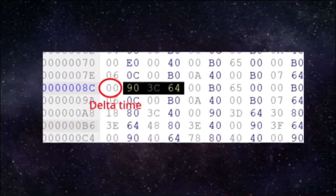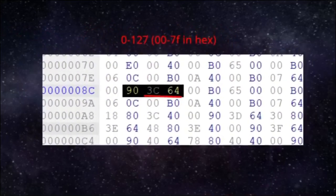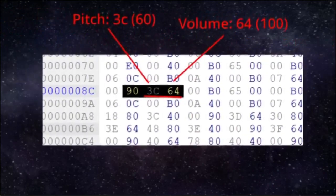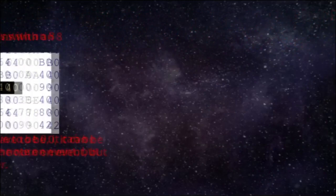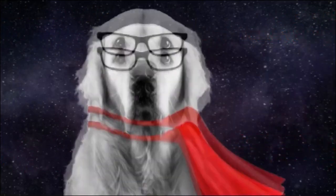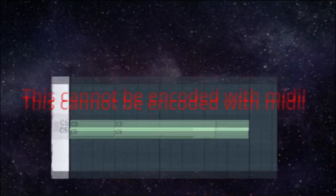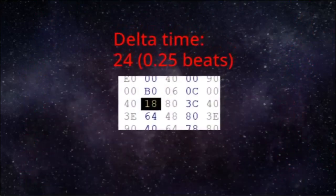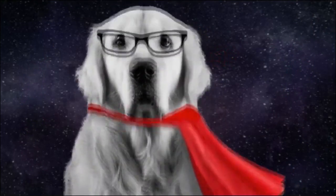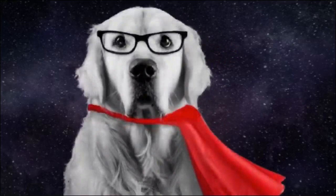Now let's move on to note on and note off events. To identify a note on event, look for a byte after the delta event that starts with a 9. The second letter in the byte tells you the MIDI channel of the note. Next, there are 2 data bytes that range from 0 to 127 — the first one tells you the pitch, with 60 being middle C, and the second one tells you the volume. A note off event begins with an 8 and has the same structure as a note on event, except the volume is 0. The note off event stops the previous note on event with the corresponding pitch and channel. Between a note on and note off event there is generally a delta time of over 0. But if the delta time is 0, that means multiple notes are played at once, or multiple notes are released at once — this is how MIDI files can store chords.